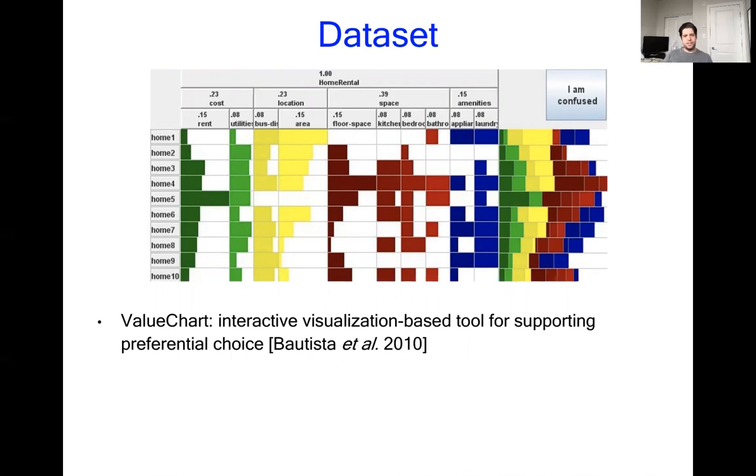This data set is composed of user interaction with the ValueChart, which is an interactive visualization-based tool for supporting preferential choice. In this case, selecting the best home from amongst ten choices in terms of the cost, location, space, and amenities.